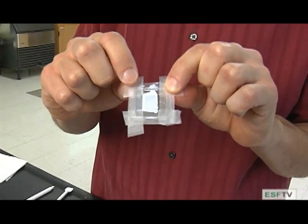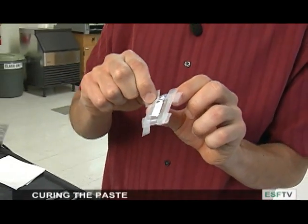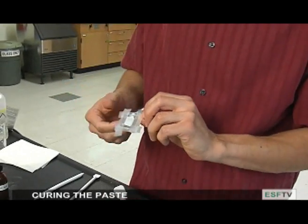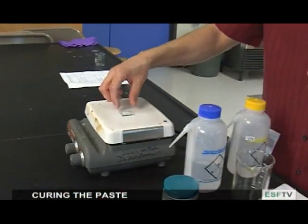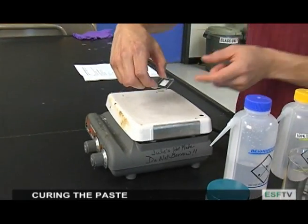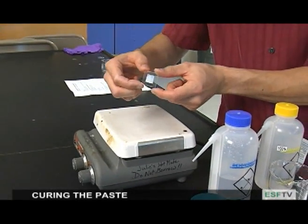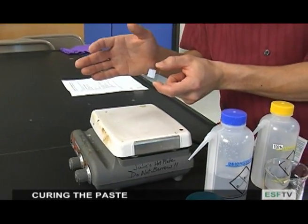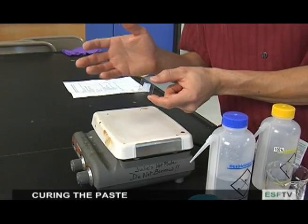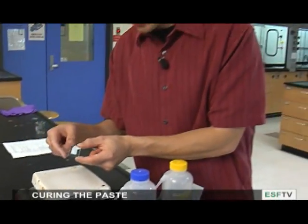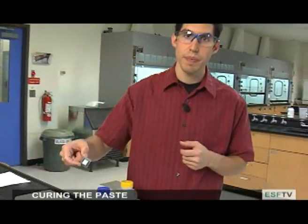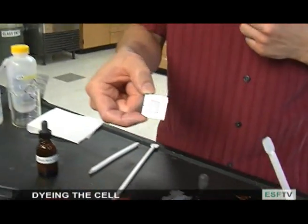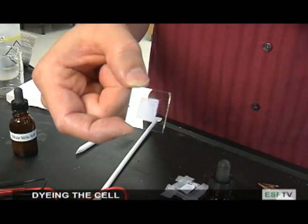We then have to take that cell and heat it on a hot plate. So you can remove the tape and place it on the hot plate. Once it's on the hot plate, it should heat for about ten minutes, at which time the small pieces of titanium dioxide will anneal together or slightly melt and strengthen the material. You can see it has a nice white border on it. At this stage, we're ready to dye the cell so it can actually absorb sunlight.